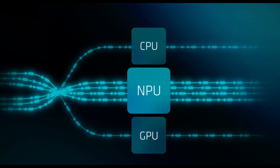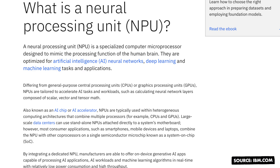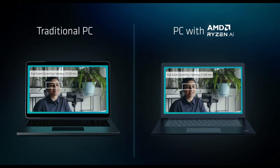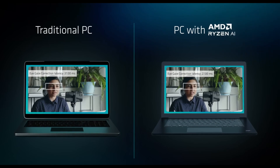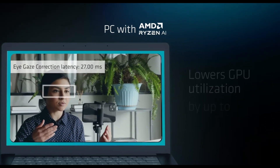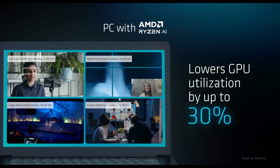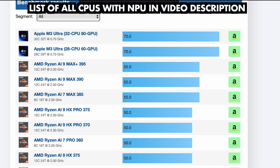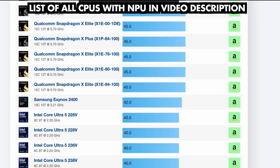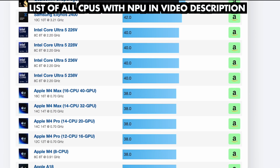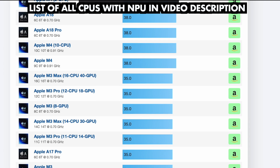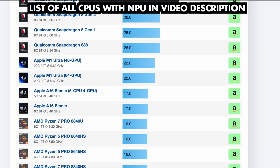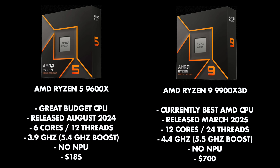Some CPUs now feature a Neural Processing Unit (NPU), which is optimized for running AI tasks, but in its current state it's mostly useful for mobile devices such as laptops. The latest desktop AMD processors don't come with an NPU, but it is possible that clever developers will come up with tools that make good use of them. Here's a list of CPUs with NPUs in case you want one — just keep in mind that most of them are mobile CPUs.